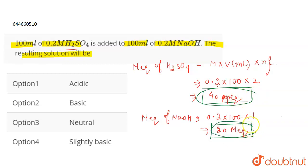The milliequivalence of H2SO4 is greater than the milliequivalence of NaOH, which means that H2SO4 is present in excess.